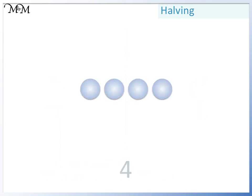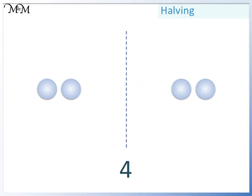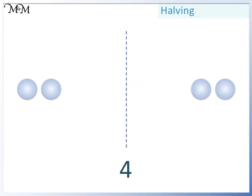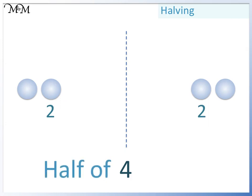Here we have four counters. To halve them we divide them into two equal parts. We have two counters on the left and two counters on the right. So half of four is two.